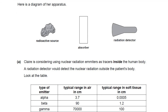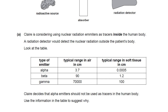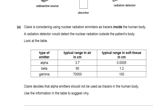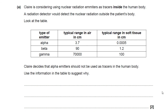Claire is considering using radioactive emitters as tracers inside the human body. We can inject something radioactive, it goes around the bloodstream, and we'll be able to find problems with flow or any places where blood is building up. A radiation detector would detect the nuclear radiation outside the patient's body.